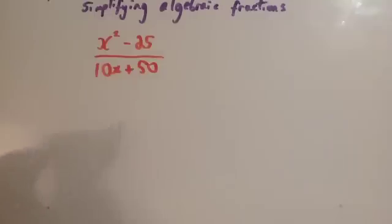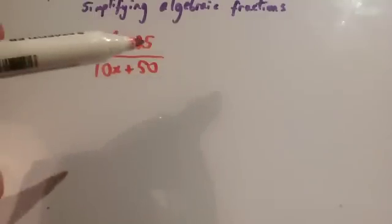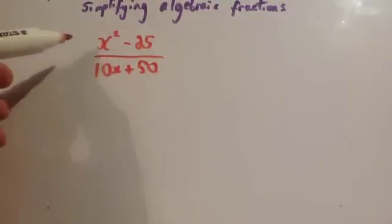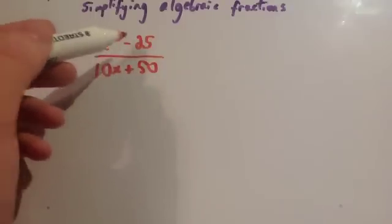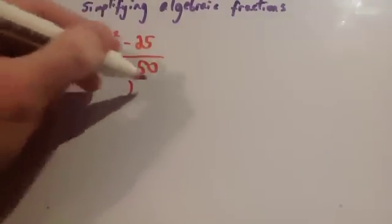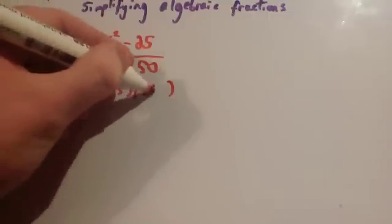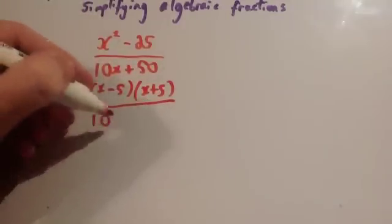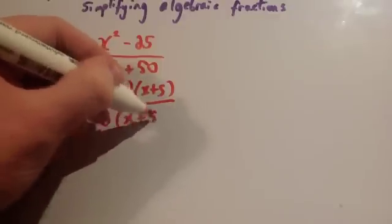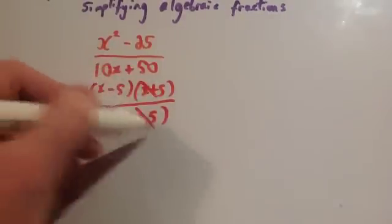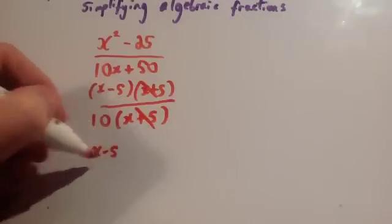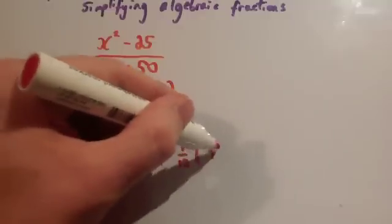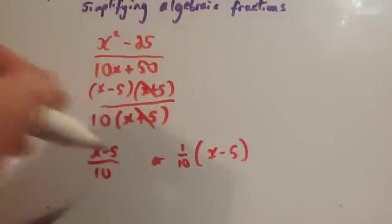In this question we've got x squared minus 25 over 10x plus 50. Let's factorise the top and bottom lines. The top line is a difference of two squares — you've got x squared and minus 25 — so you get (x minus 5)(x plus 5). The bottom line: 10 comes out as a common factor, giving 10(x plus 5). The (x plus 5) terms cancel, so the answer is x minus 5 over 10. You could also write that as one tenth bracket (x minus 5), though I'd personally write it in the fraction format.